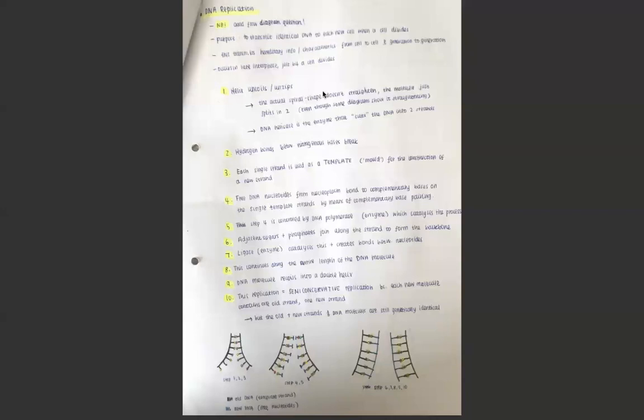The steps of DNA replication occur as follows. Step one, the helix uncoils. When I say uncoils, that can be a little confusing. The helix doesn't straighten, like stop turning 360 degrees, but it unzips. So the two strands break apart because these hydrogen bonds between nitrogen bases break, which is step two, causing the helix to unzip. This is controlled by the enzyme DNA helicase.